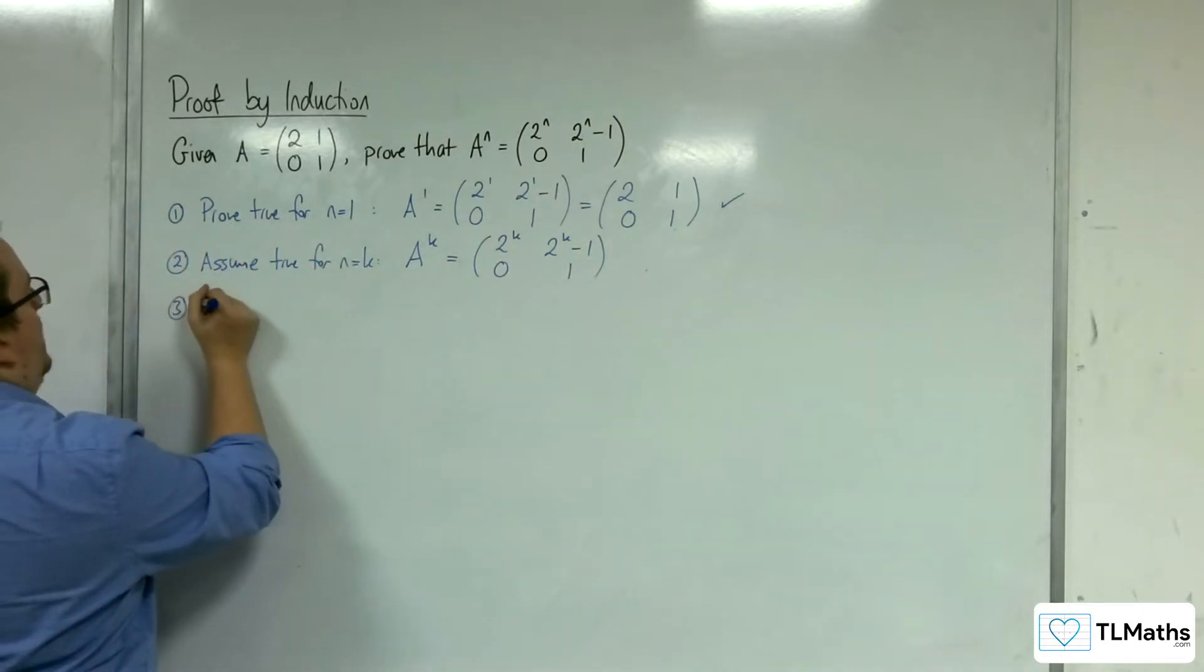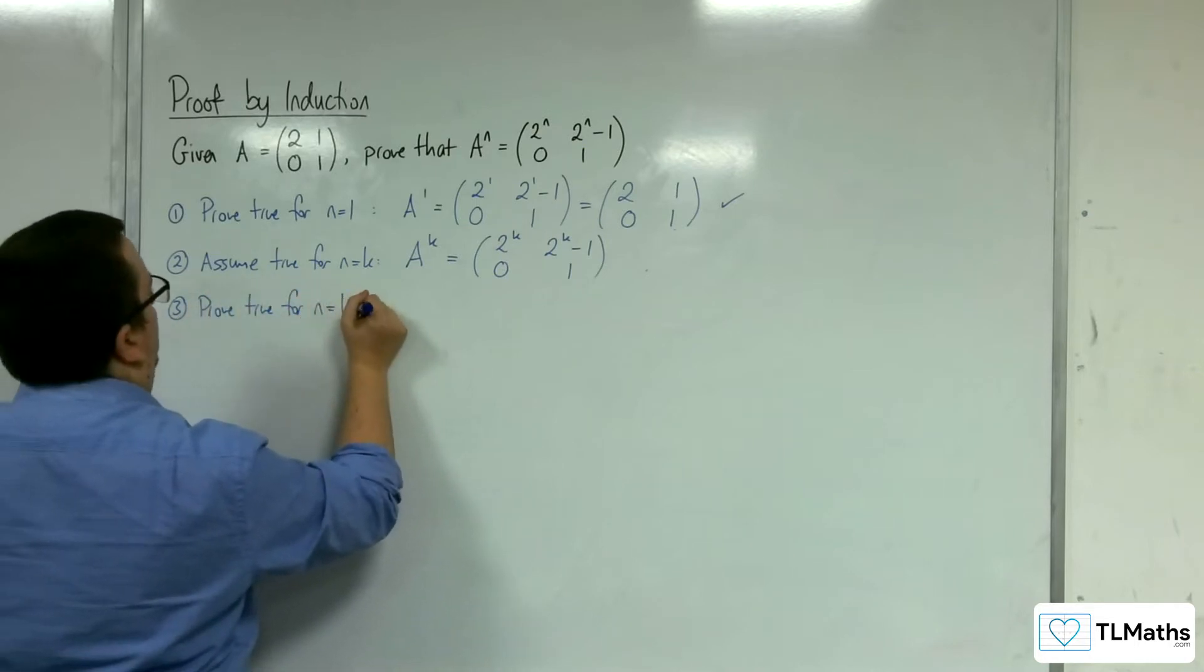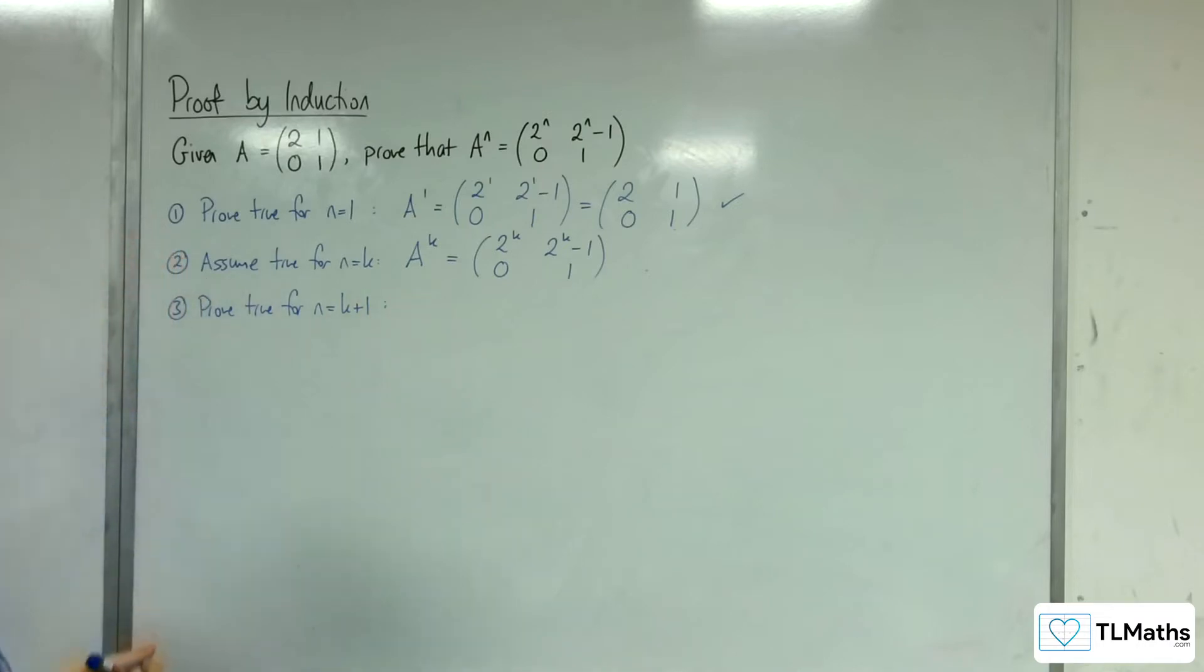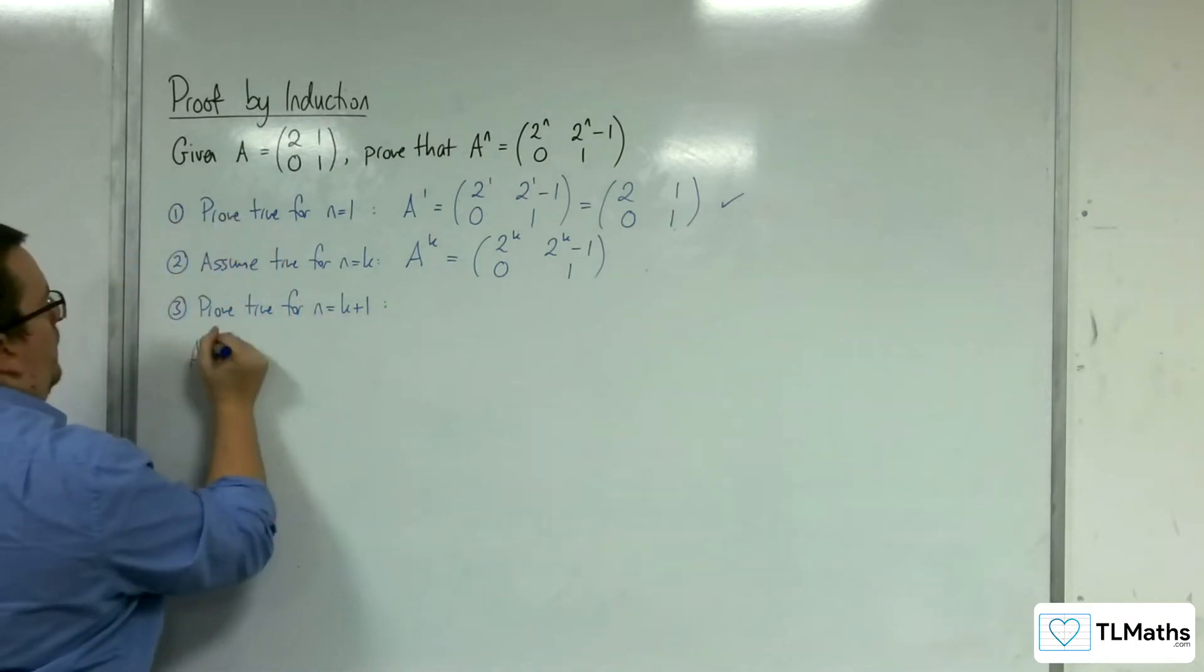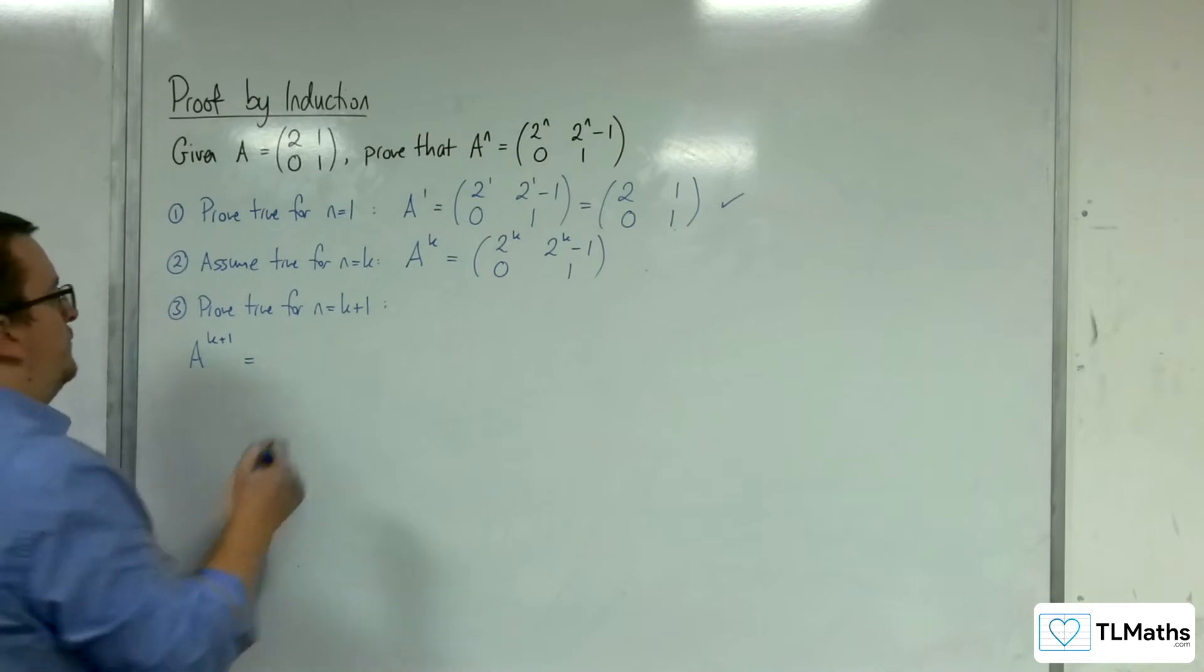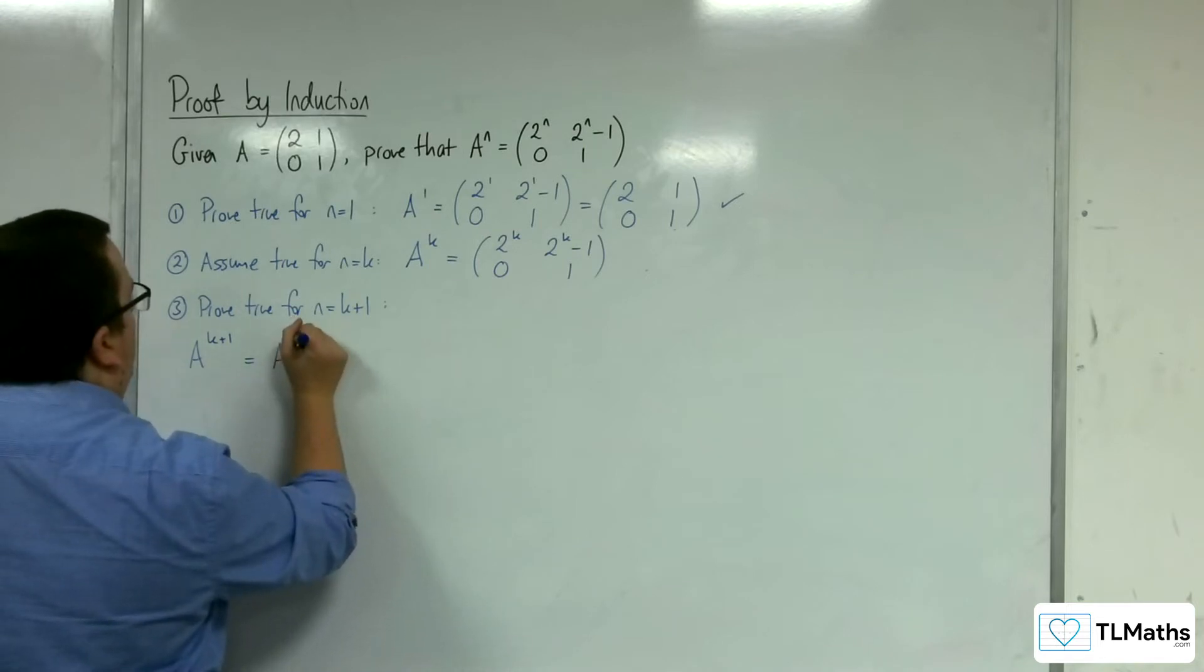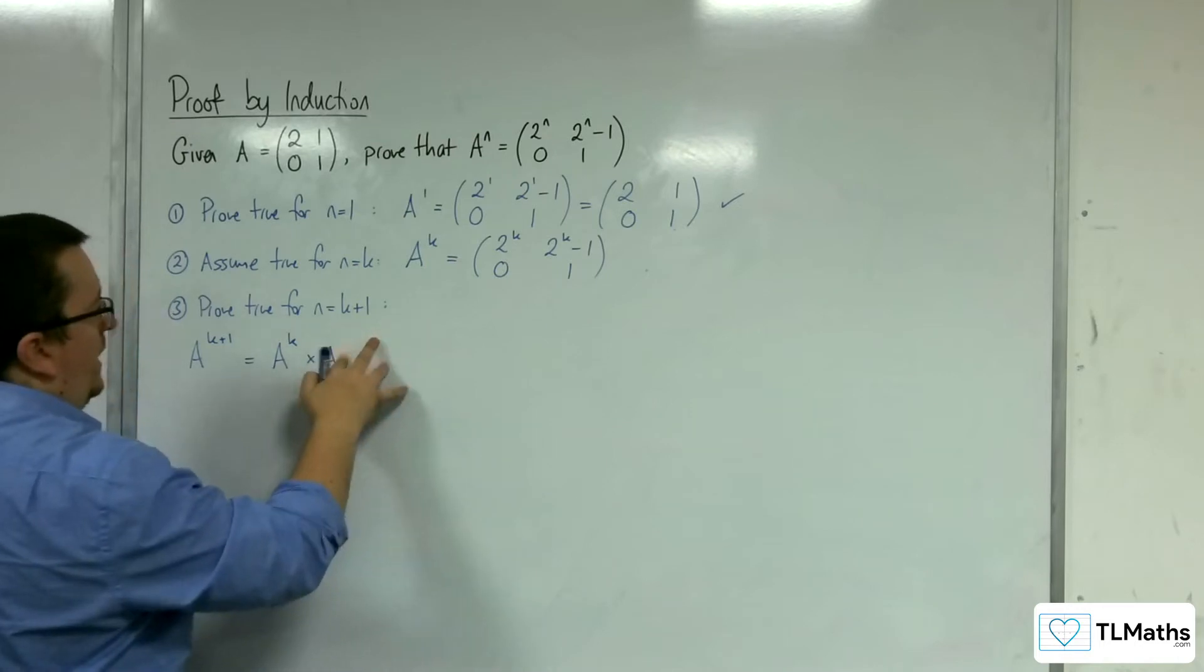Stage 3: we need to prove that it's true for n equals k plus 1. If I'm going to have A^(k+1), then A^(k+1) is going to be A^k times A^1, or just A.